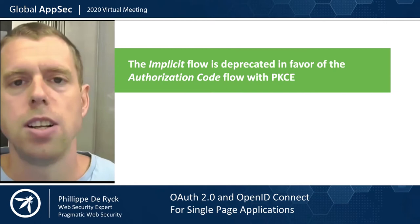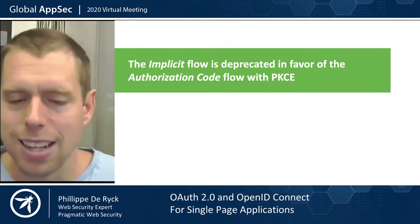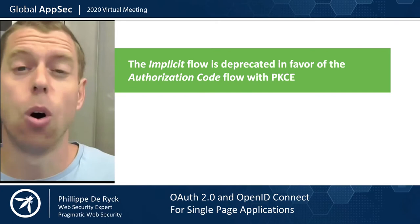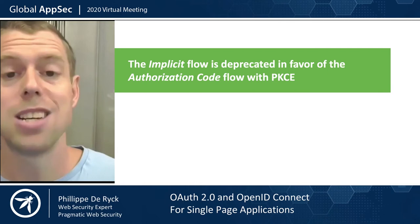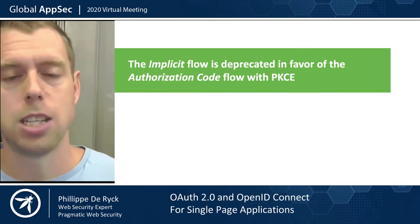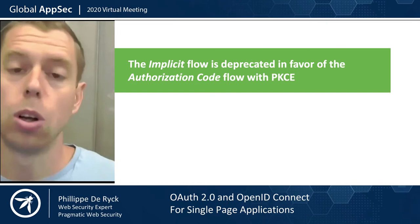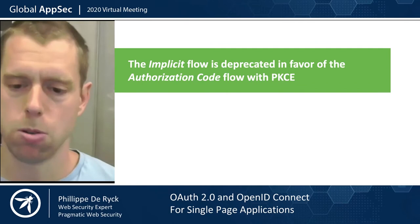That's why I recommend using a library — the library is implemented correctly. And this brings us to the first takeaway: the implicit flow is deprecated in favor of the authorization code flow with PKCE. This doesn't mean the implicit flow is broken or more broken than it was a year ago — there are no new vulnerabilities. What simply happened is that we have a better alternative. The recommendation is to use it today instead of the implicit flow, because our browsers got better and are capable of doing cross-origin API calls to do the code exchange.